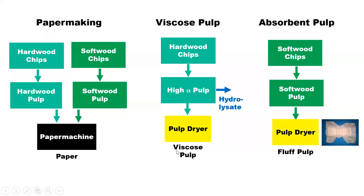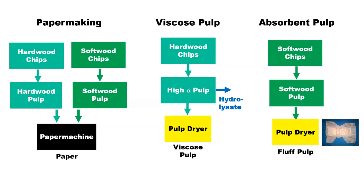For more specific markets, for instance softwood pulp can produce fluff pulp for those applications. There is a diversity of different paper and pulp products. When we talk about biorefineries, we can also think about bioenergy units where we take wood, do hydrolysis and refining, apply enzymes in a biochemical platform, and by fermentation and distillation we can produce ethanol. There is also a residue which will be lignin. This is a typical biorefinery process where the main goal is to produce biofuels.